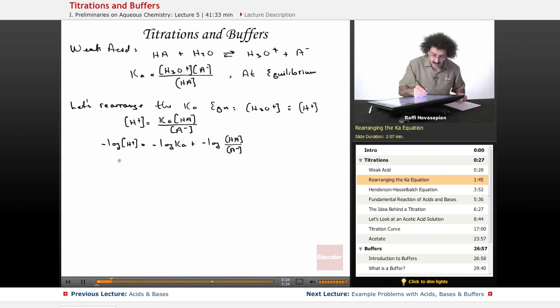Well, the negative logarithm is the definition of pH. So this becomes pH equals pKa minus the log of HA over A-, in other words, the acid form over the conjugate base form.